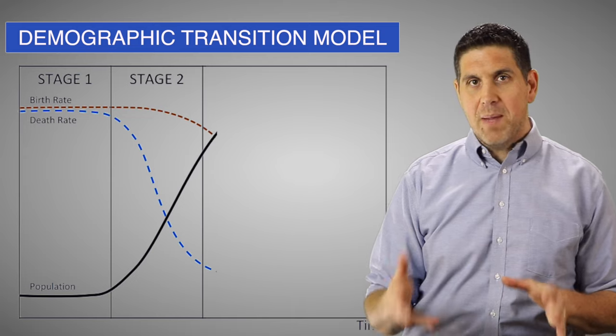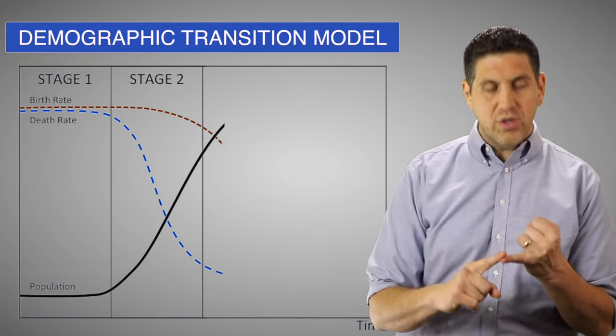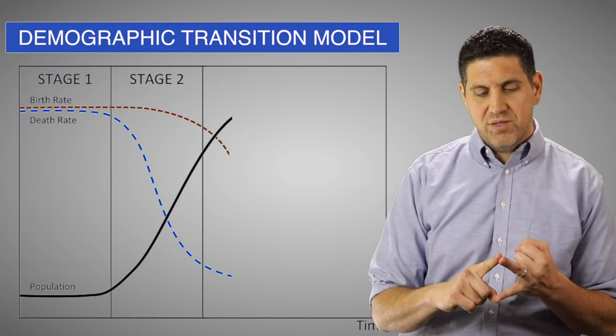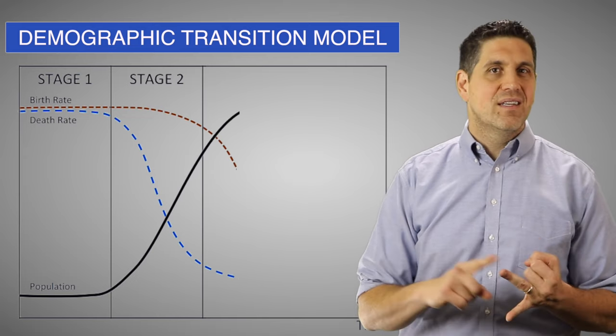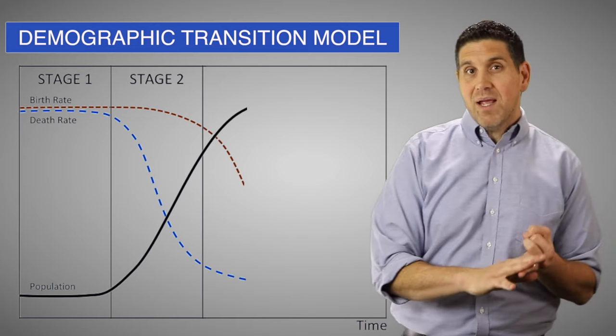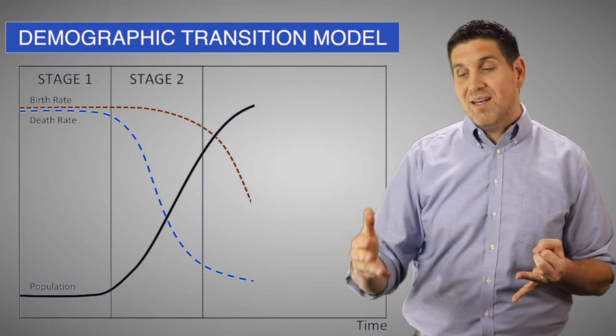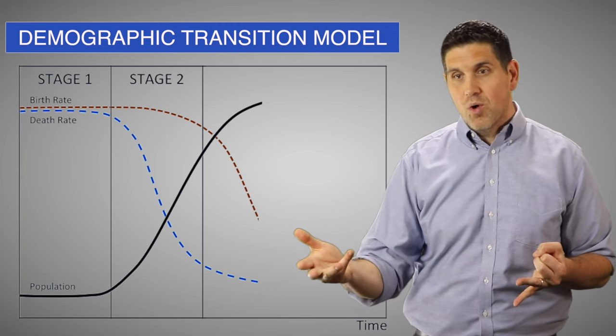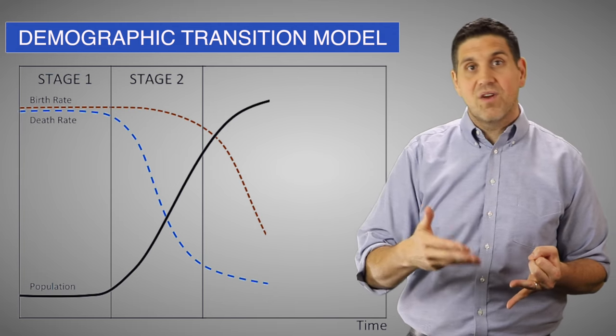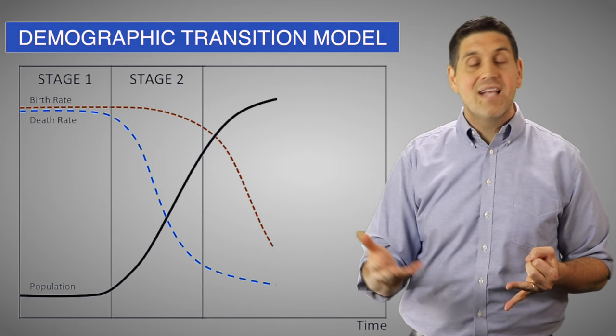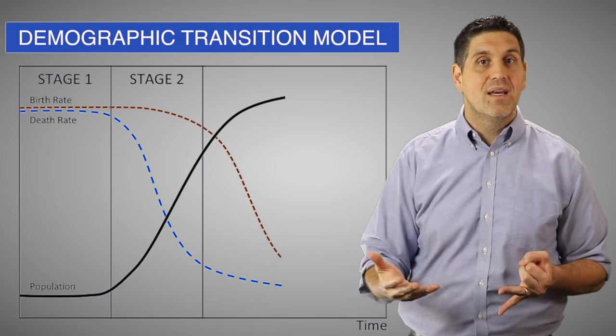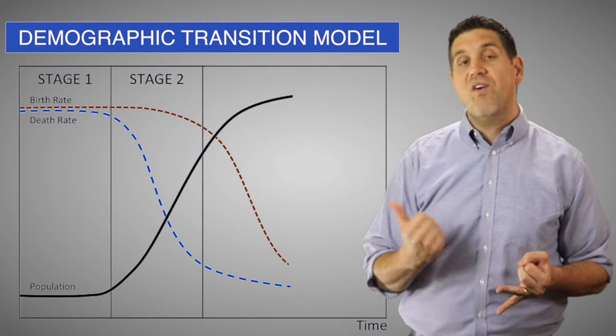As economies industrialized, people moved from rural to urban areas — from farms to factories. This means that a lot of families didn't have either the room or the necessity for a lot of kids, and so the birth rate started to fall.